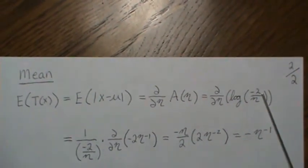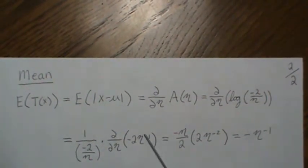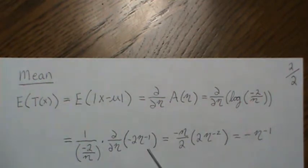To take the derivative, it's 1 over this, times the derivative of this, which becomes this. You invert and multiply there, and we get 2 times eta to the minus 2.